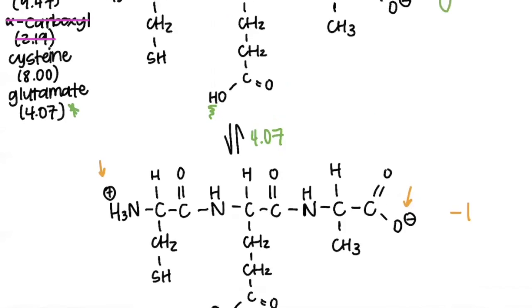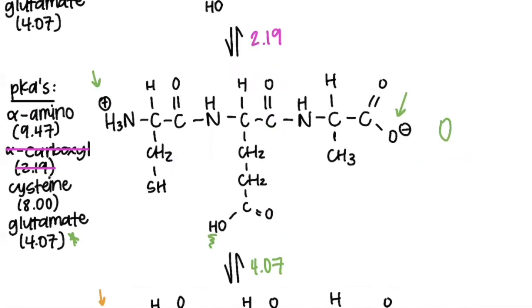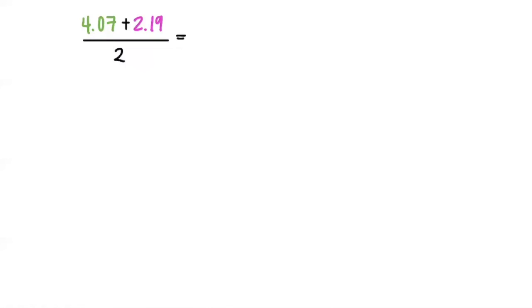But when we're dealing with pI, we only care about the two pKa's on either side of the tripeptide that has the overall charge of zero. So you can choose to keep going and deprotonating, but this is all you need to calculate the pI. So now all you do is take the average of the two pKa's and you get 3.13.